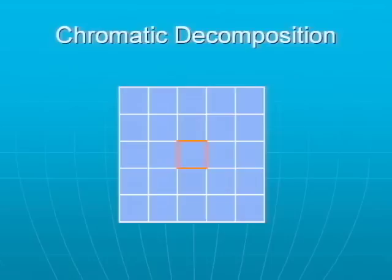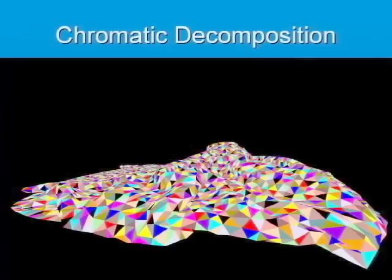Next, we make sure that every polygon at distance of 2 in the mesh also has a different color. Here we show the chromatic decomposition of a triangulated mesh.